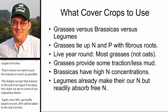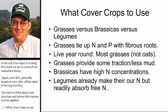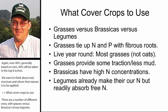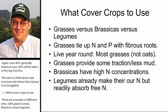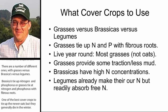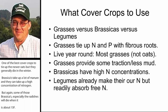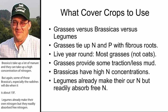What cover crops to use? There are a number of different ones: grasses, brassicas, and legumes. The nice thing about grasses is they tie up nitrogen and phosphorus and have very fibrous root systems. Most of them live year-round. One of the best cover crops to tie up manure is oats, but oats generally die in the winter. Brassicas also take up a lot of manure and can absorb very high concentrations of nitrogen, but some brassicas — especially radishes — will die when it gets to about 15 degrees Fahrenheit. Legumes already make their own nitrogen, but they will readily absorb free nitrogen if it's available. In many cases we may use a mixture, but we would heavily lean toward grasses because they tend to do a little bit better job.